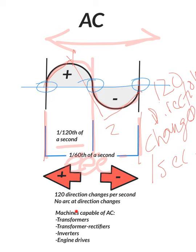What machines are capable of AC? Transformers obviously, transformer rectifiers, inverters, and engine drives. It just depends on the machine. Not all inverters can do AC, not all transformer rectifiers will do AC. Maybe they just run DC. It just depends.